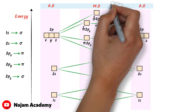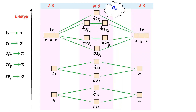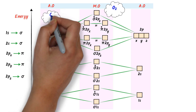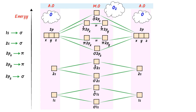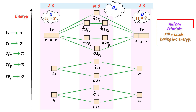Now we will draw the molecular orbital diagram of oxygen molecule. When two oxygen atoms combine together, they form the oxygen molecule. I write one oxygen atom at the left hand side and one at the right hand side. The atomic number of each oxygen atom is 8, meaning each oxygen atom has 8 electrons. According to the Aufbau principle, we fill those orbitals which have lower energy first.